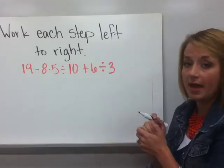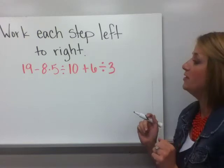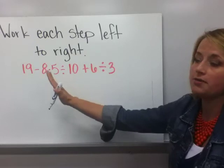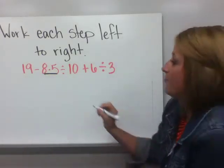Parenthesis, there's not any there. Exponents, not there. So let's go to step three, multiplication and division. I have multiplication here, division here, division here. I'm going to work those left to right. So I'm going to start with eight times five, which is 40.